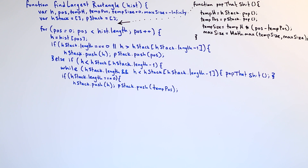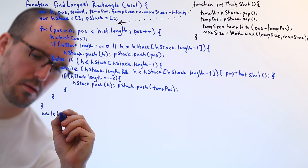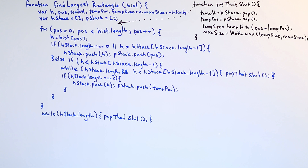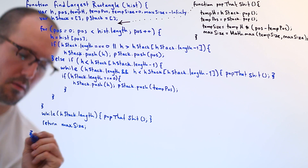Another way to think about this: say we're at height two and have three things on the stack already. Two is now the smallest number, meaning this two actually started three positions ago. We need to go back in time and find the first value in the stack bigger than two, and steal its position — that's the start point of our height-two rectangle. Once we've finished iterating, we might have stuff in the stack that hasn't closed yet. We need to redo the `popThat` approach but stop when the stack is empty, then loop through to grab each value, calculate the area, and find the maximum.